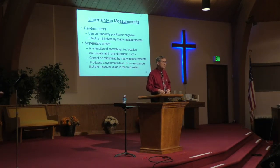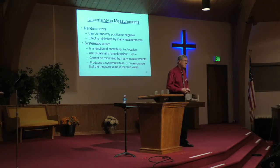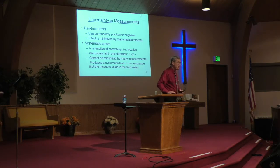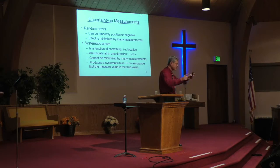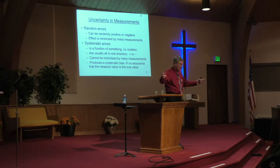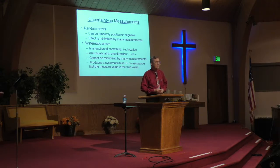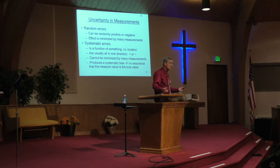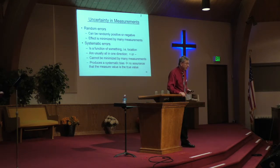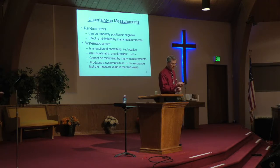A systematic error is a function of something such as location, usually all in one direction — either positive or negative. It cannot be minimized by doing many measurements, and it produces a systematic bias. If I told you the ruler was only 10.5 inches, the difference between your 93-foot reading and the actual 105 feet would be the systematic bias. If there's a systematic bias and you don't know what that bias is, you would have no assurance that the measurement value was the true value — the only option would be to reject the data. And that's what they should have done with the carbon dating of the Shroud.